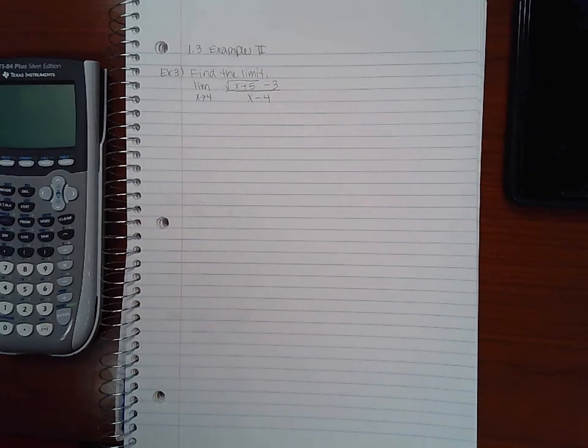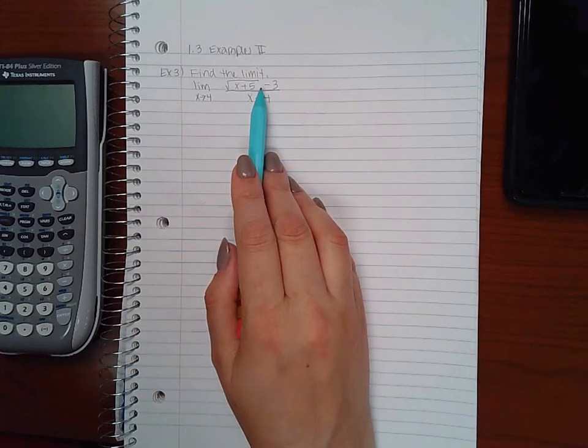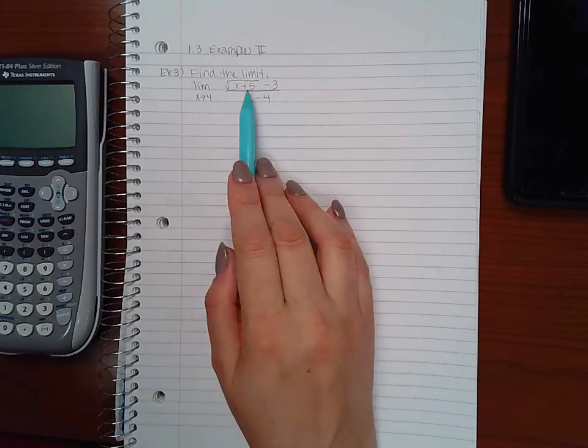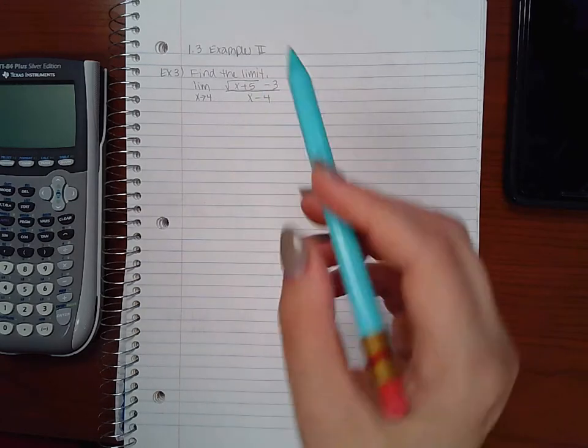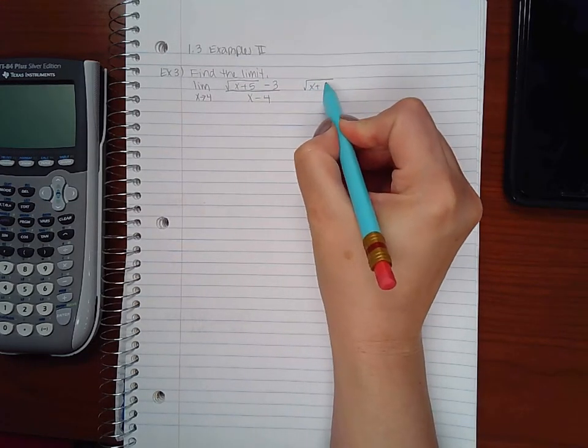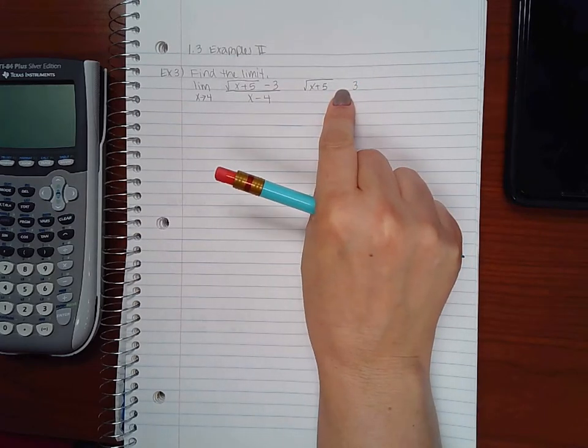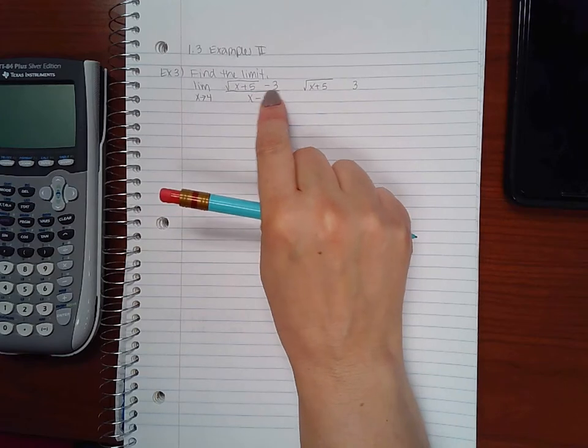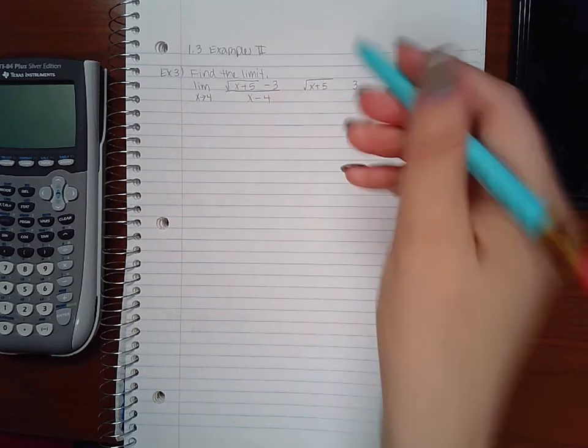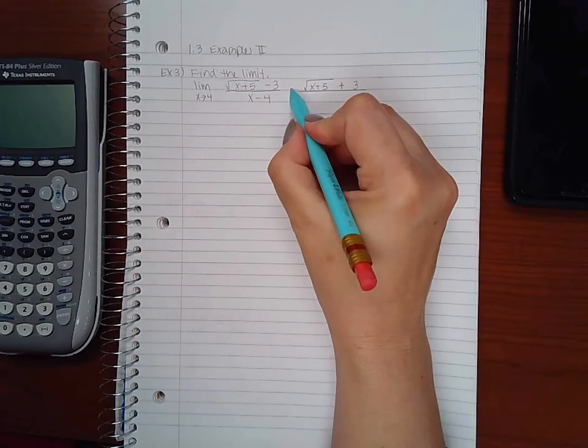Now, the easiest way to manipulate functions that have square roots is to use the conjugate. Since the numerator is the term that contains the square root, I will be taking the conjugate of the numerator. So the conjugate would be the first term, which is square root of x plus 5, and the second term 3, but with a different sign in the middle. Since this is minus 3, I will be using plus 3, and then I will multiply the same thing at the bottom.